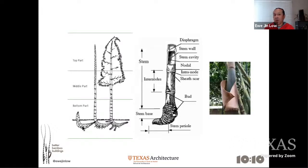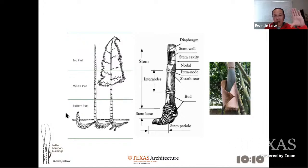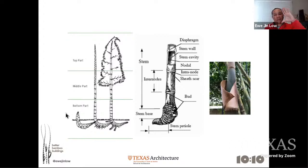Bamboo grows very fast — sometimes up to a metre a day. Size-wise, it can be as small as 30 cm or one foot as a bamboo grass, or it can grow up to 130 meters for some species.